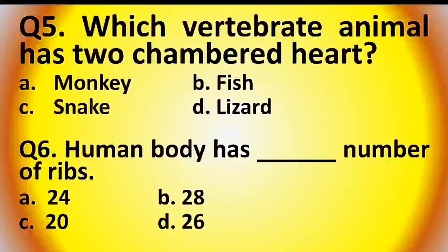Question 6: The human body has how many ribs? Options are: 24, 28, 20, or 26. The answer is option A: 24.